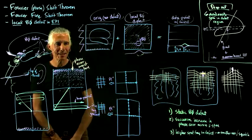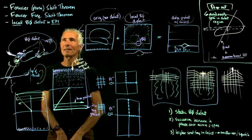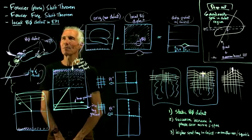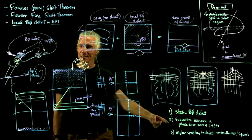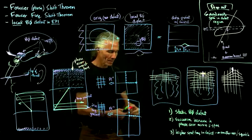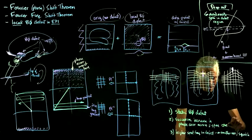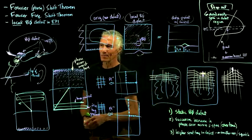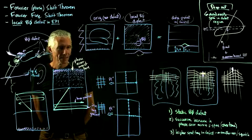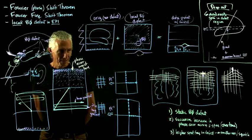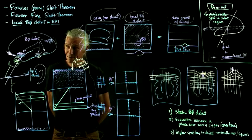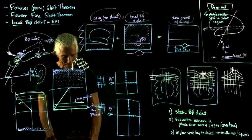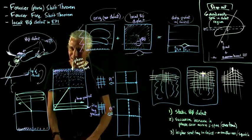So that was a long lecture. Any questions about the Fourier phase shift theorem, Fourier frequency shift theorem, or local B0 defect — which is a combination of a defect plus successive increases in phase error over time across k-space? Those two things together cause the squishing. It takes a couple of years to actually remember it all, but there's always a first time.